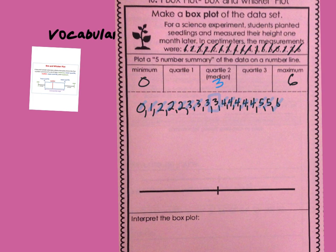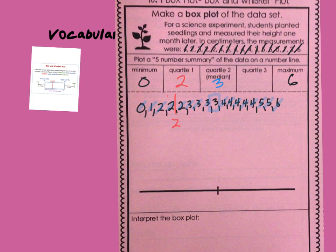Now let's find the middle of the lower data. Looking at the numbers below the median, the middle falls between two values, giving us Q1 = 2. For the upper data, we find Q3 = 4. So quartile one is 2 and quartile three is 4.